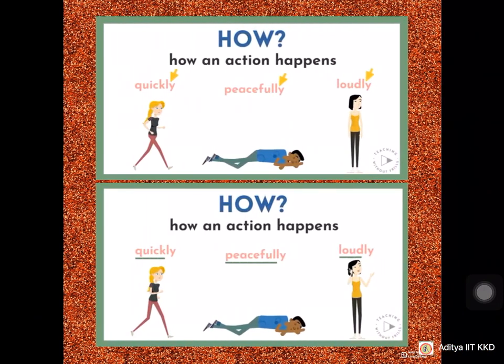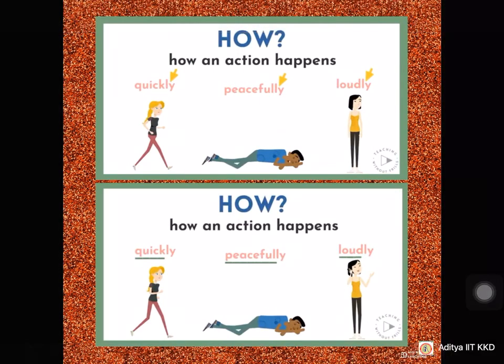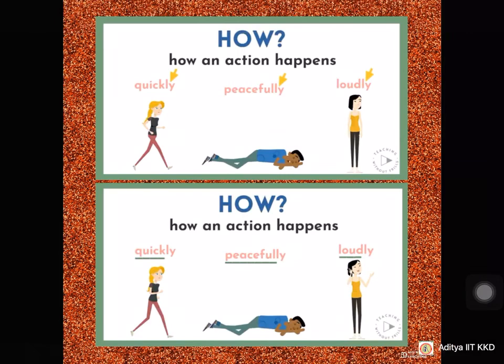Adverbs of manner tell how an action happens — examples: quickly, peacefully, loudly. There is a common point in these three words — they end with 'ly'. If you observe, 99% of adverb words end with 'ly'. Quick, peaceful, loud — these come under adjectives. By adding 'ly', they are changed to adverbs. Adjectives can be changed into adverbs by adding 'ly'.